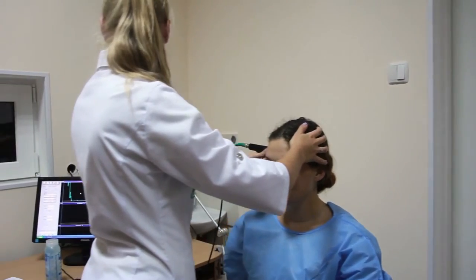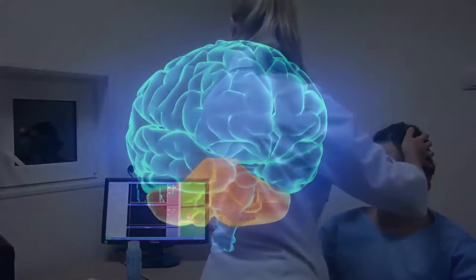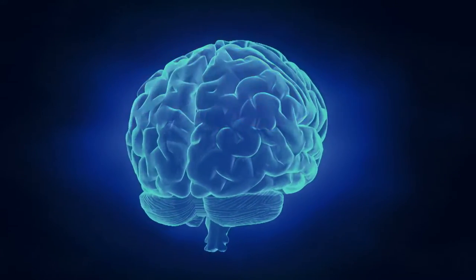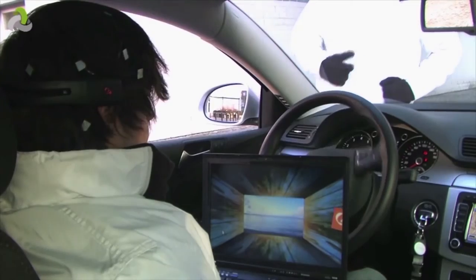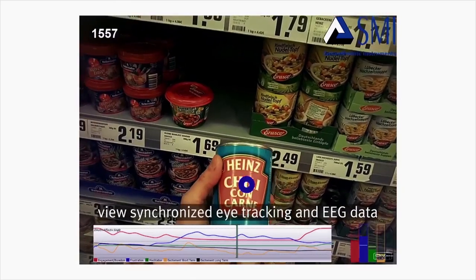For example, in EEGs certain thoughts trigger electric potentials in different regions of the brain. Companies have discovered ways to harness those impulses and use them in cutting-edge technologies.